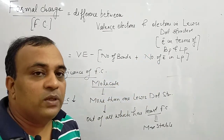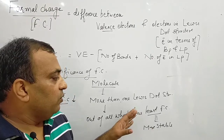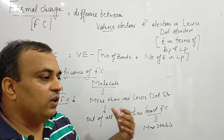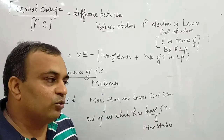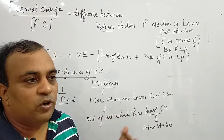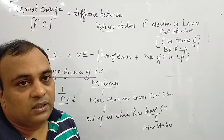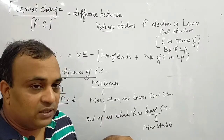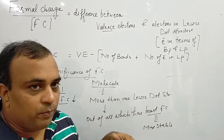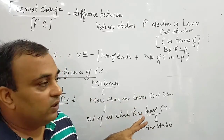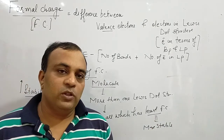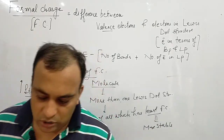Note that formal charge need not always be zero. In the examples given, there were no coordinate bonds. When you study the coordinate bond lecture, we will calculate formal charge there too. In cases of coordinate bonds, the formal charge value can be positive or negative. If a question comes in the exam, calculate properly using this formula. This is all about the formal charge.